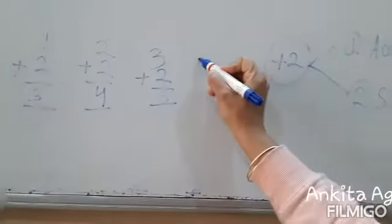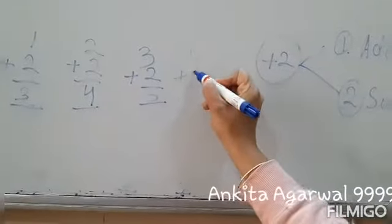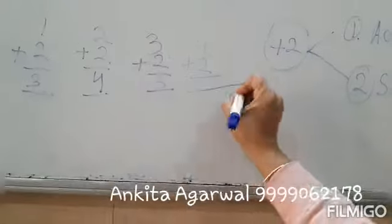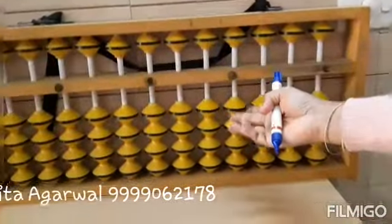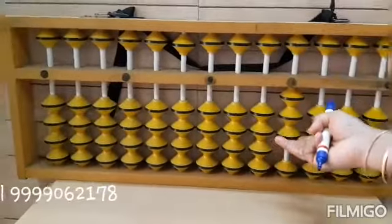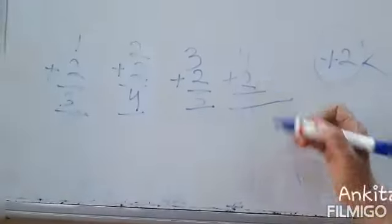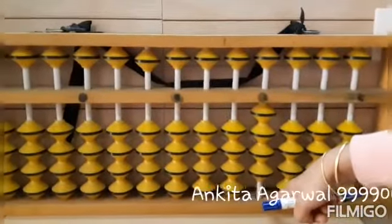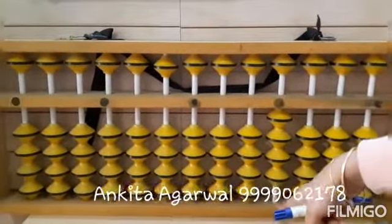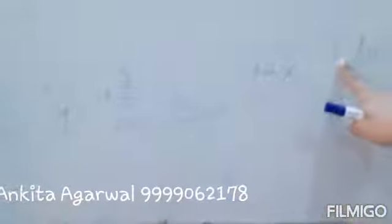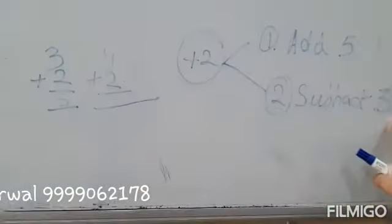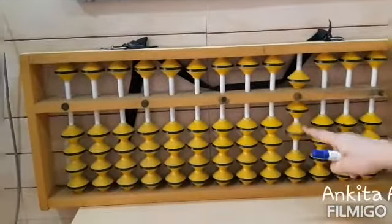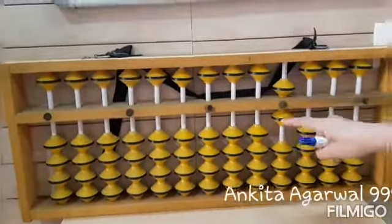Now let's take another question: 4 plus 2. First I will make 4: 1, 2, 3, 4. Now I have to add 2, but as we can see there is no room left. So I will follow the 2 steps: add 5 and subtract 3. 1, 2, 3. The answer is 6.